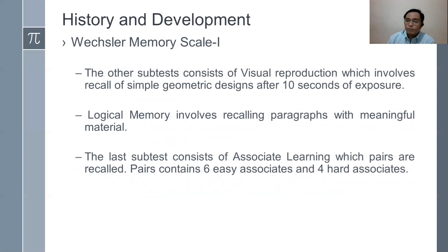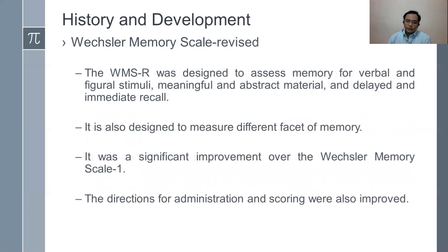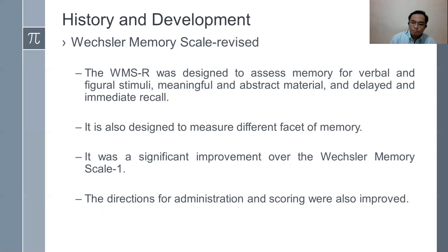Other subtests include visual reproduction, which involves recall of simple geometric designs after 10 seconds of exposure; logical memory — recalling paragraphs with meaningful materials; and associate learning, where pairs are recalled. The pairs contain six easy associates and four hard associates. The main disadvantage of WMS 1 is that its concept was focused only on short verbal memory, with no long-term memory component. Therefore, to address that disadvantage, a revision was made.